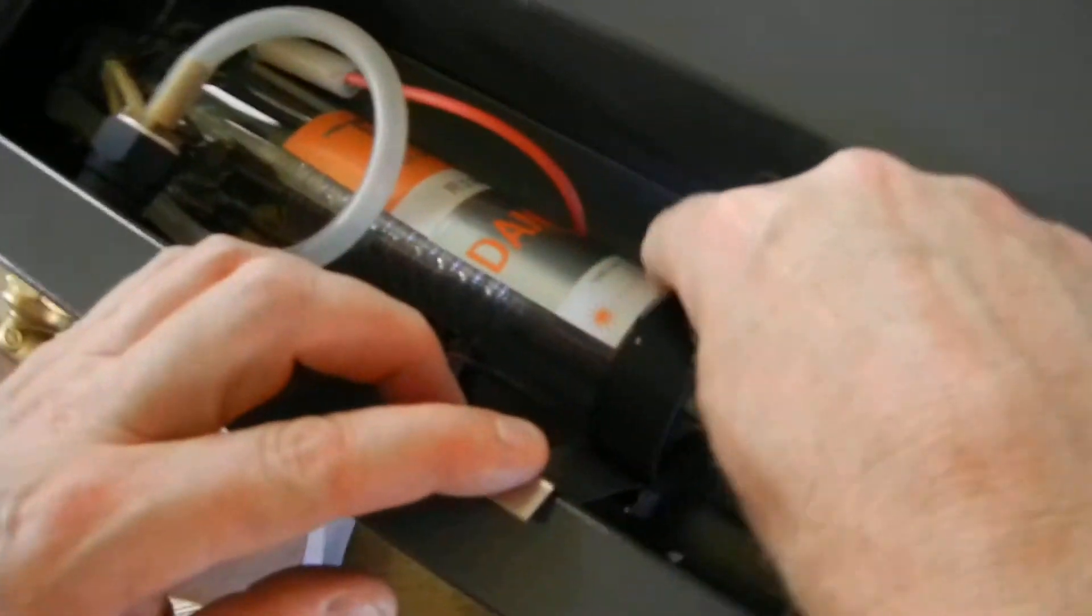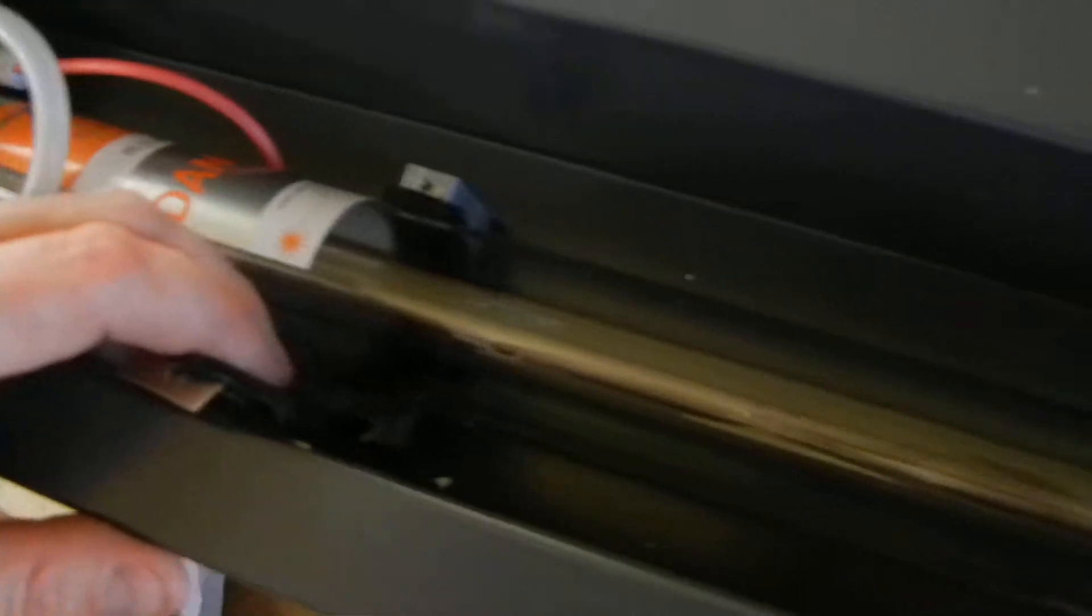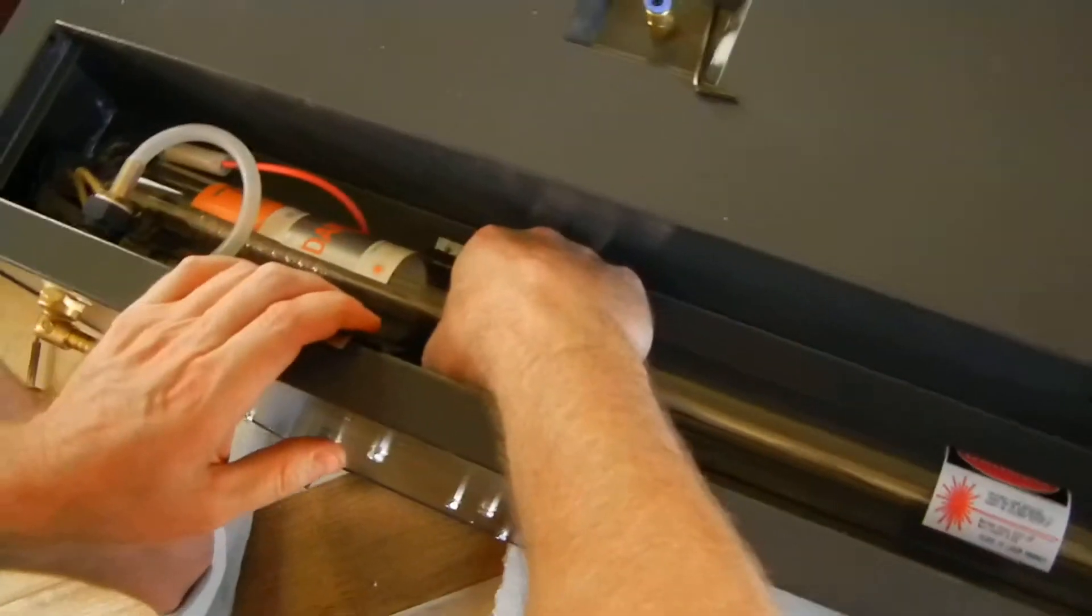When you get that up, this rubber here just usually pulls right back. You get that out of the way and you get the other side out of the way and this tube should come right out of here.